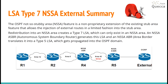The OSPF Not-So-Stubby Area feature is a non-proprietary extension of the existing stub area feature that allows the injection of external routes in a limited fashion into the stub area. A redistribution into an NSSA area creates a Type 7 LSA, which can only exist in an NSSA area.